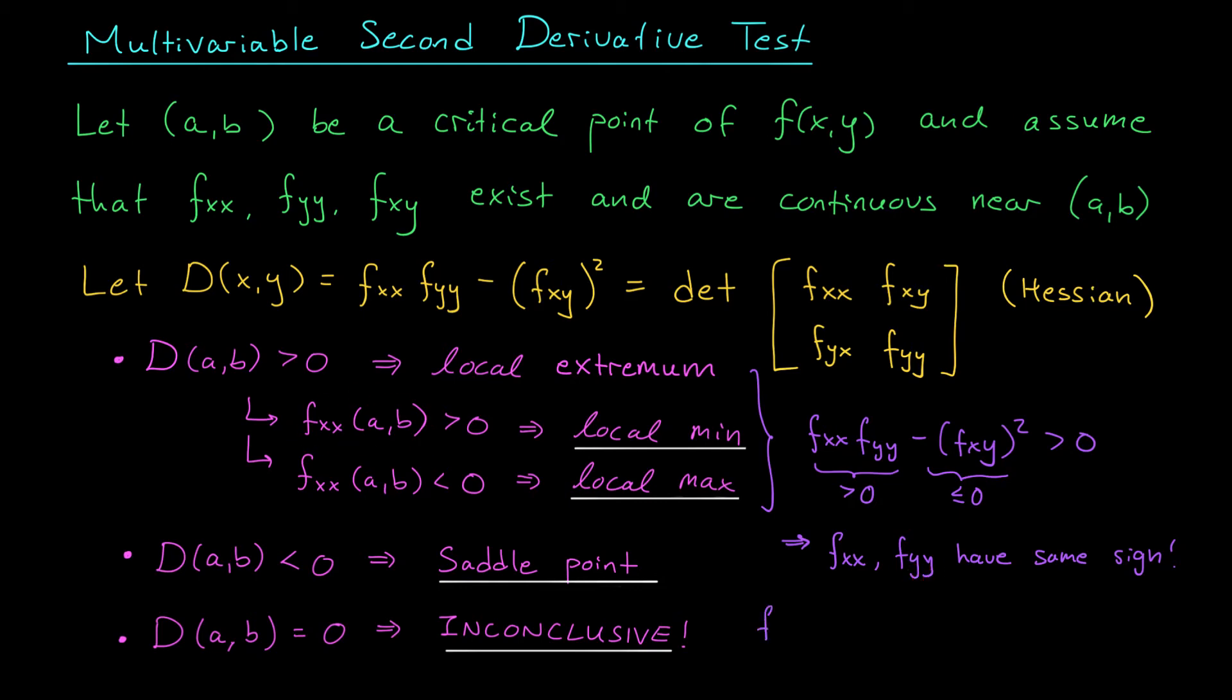Now, if fxx is positive, then fyy is also positive, which means that in the x and y directions, my function is concave up. It looks sort of like this. You can see we're getting a bowl shape. That gives us a local minimum.